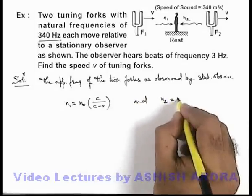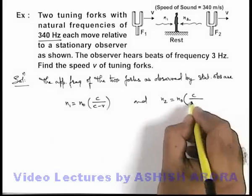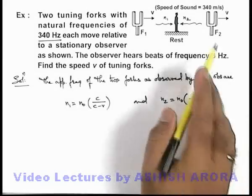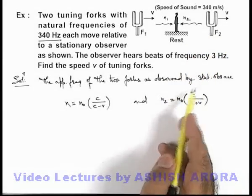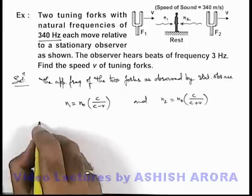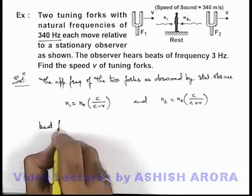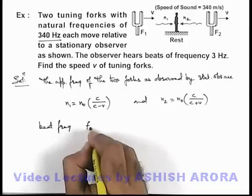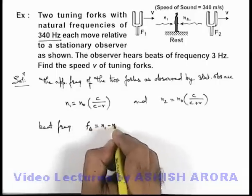And n2 can be written as n naught c divided by c plus v. As the second fork is moving away this will be less. And here we can simply write beat frequency as f_b equals n1 minus n2.